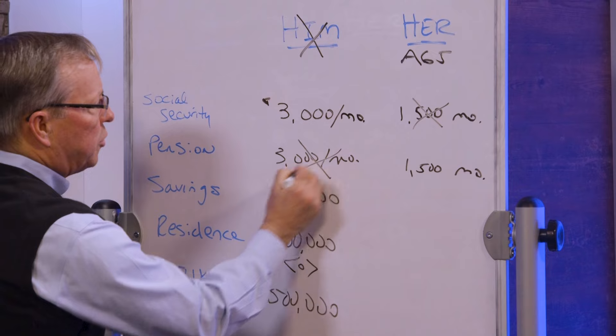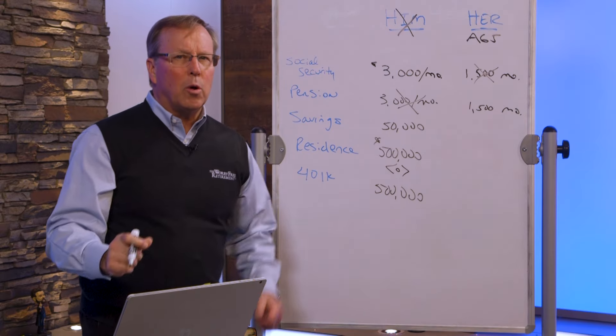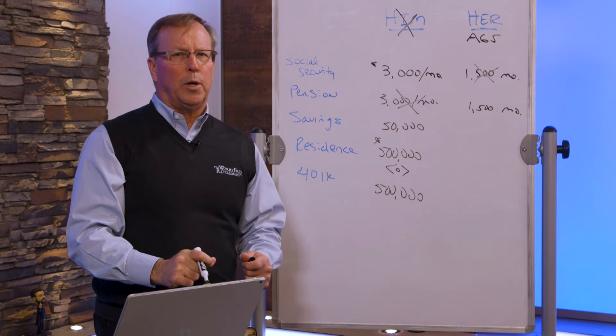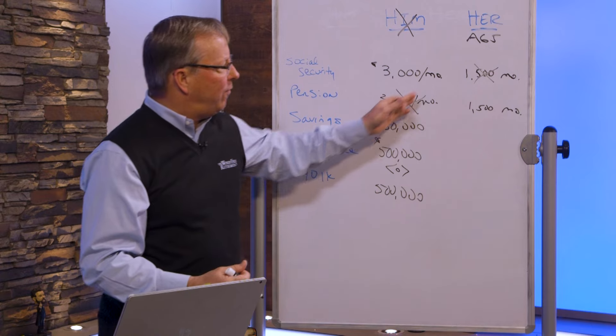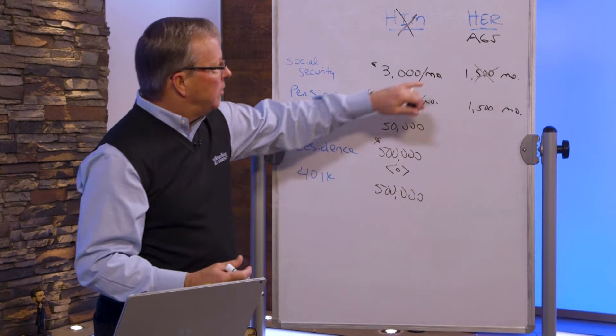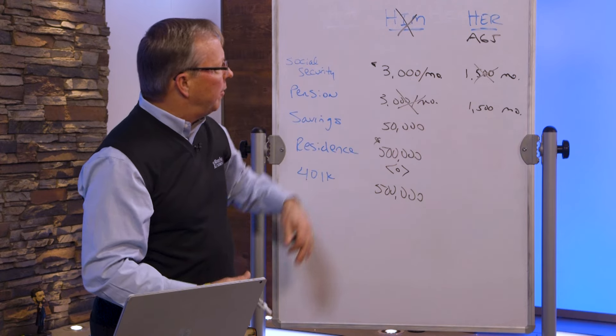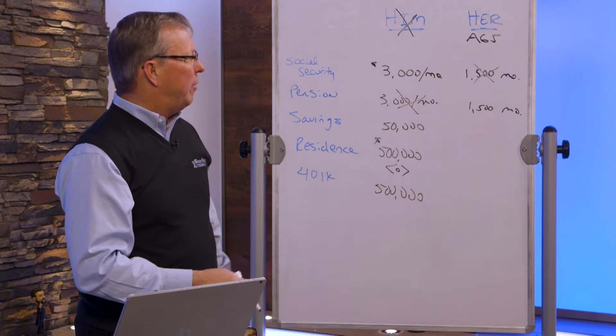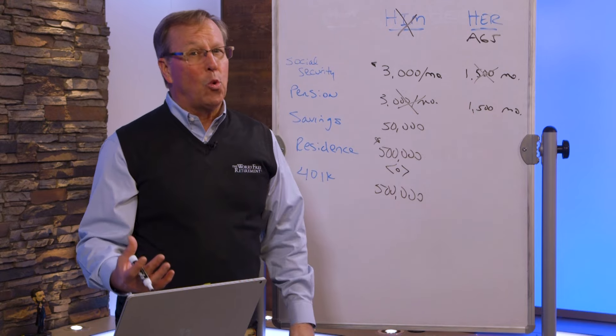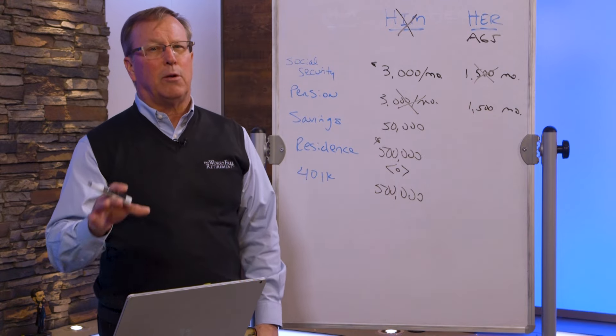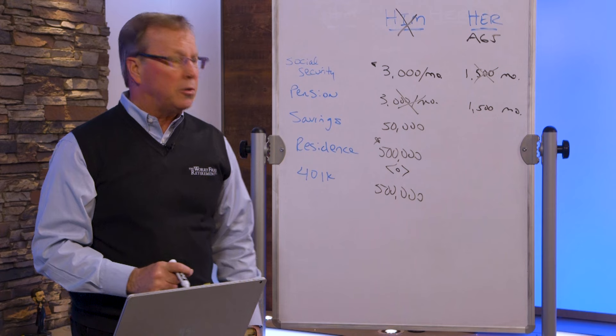Plus, his pension changed. He was drawing $3,000 a month for them to enjoy. At his death, it became 50% of that. So now, she had before, what is that, $4,500 plus another $3,000? What is that, $7,500 a month? Now all of a sudden, she's down to $4,500 a month. That's $3,000 a month of a financial haircut she just took.